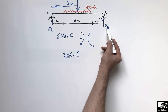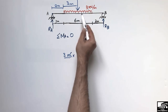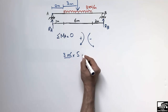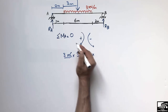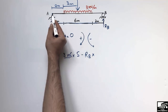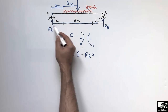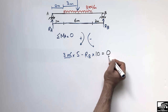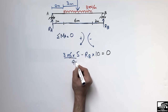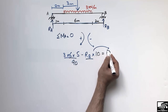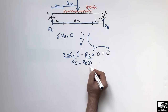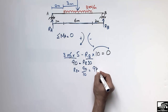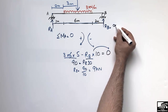RB acts in the opposite (anticlockwise) direction, so it is taken as negative. The moment arm for RB from point A is 2 + 6 + 2 = 10 meters. Setting summation of moments at A equal to zero: (3 × 6 × 5) − RB × 10 = 0, giving 90 − 10·RB = 0, so RB = 90 ÷ 10 = 9 kN.